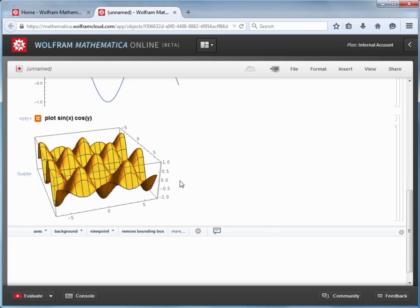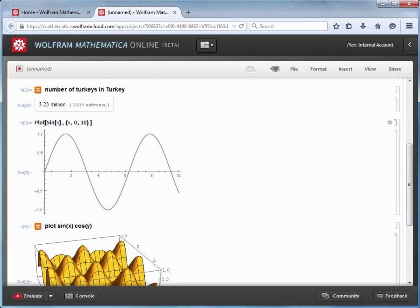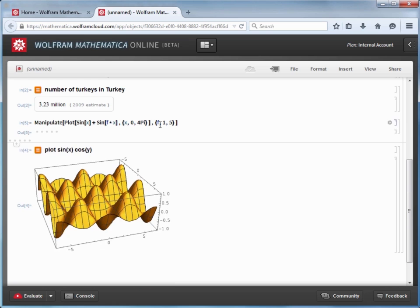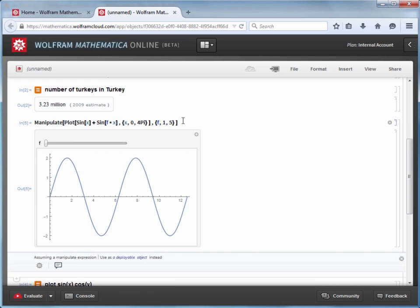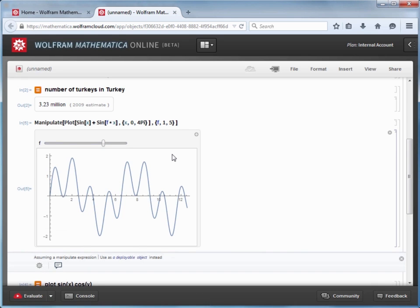I can also use the manipulate command to create an interactive model. So let's manipulate the plot of sine of X plus the sine of F times X. We'll say X goes from 0 to 4 pi, and then F will take that from 1 to 5. Once that's finished, we can move that slider bar so we can examine what happens to this plot when F takes on different values.